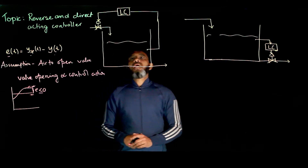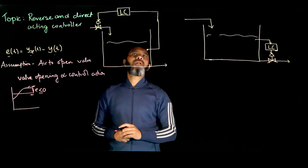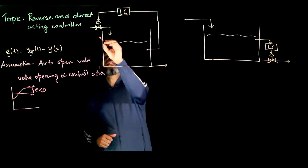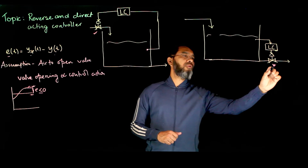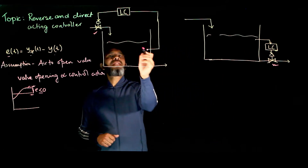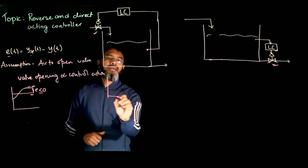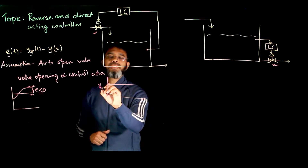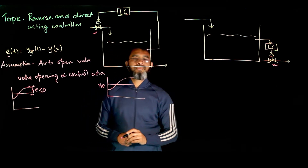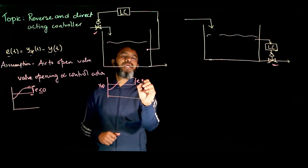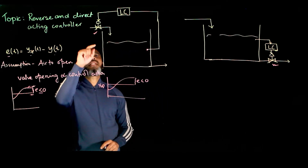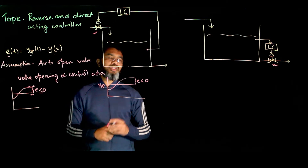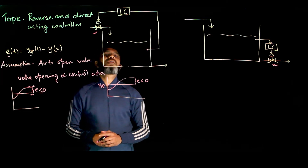Now consider the tank example where you want to maintain the liquid level. You can maintain the level by manipulating either the inlet flow or the outlet flow. When manipulating the inlet flow, suppose the desired value is the set point and the output goes beyond it — the error is negative. We assume the valves are air-to-open valves, meaning to open the valve you need instrument air, and more air pressure means more valve opening.